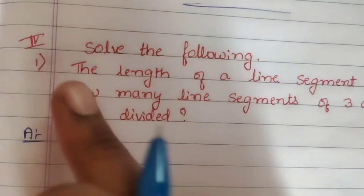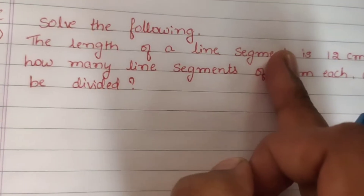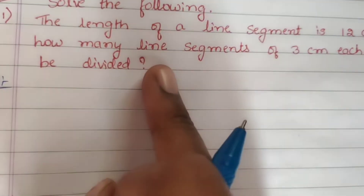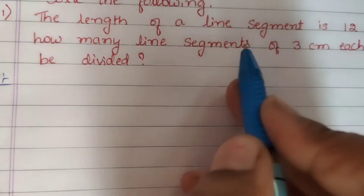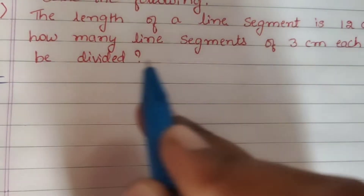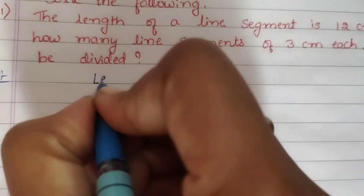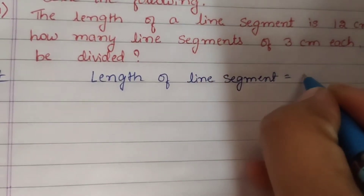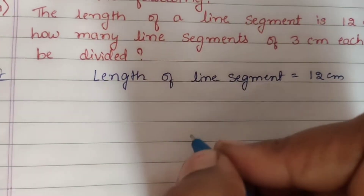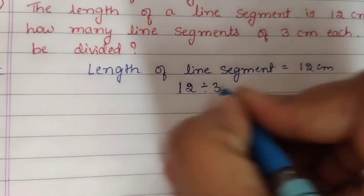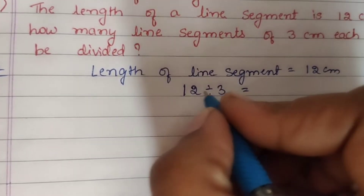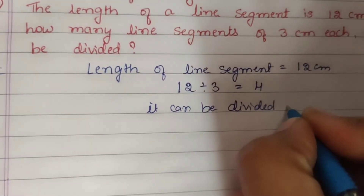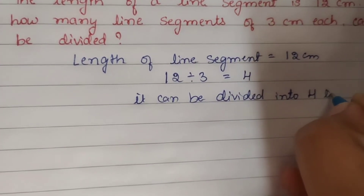Fourth: Solve the Following. First question: The length of a line segment is 12 centimetres. Into how many line segments of 3 centimetres each can it be divided? The length of the line segment is equal to 12 centimetres. So, 12 divided by 3 — 3 ones are 3, 3 twos are 6, 3 threes are 9, 3 fours are 12. So it can be divided into 4 line segments.